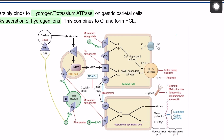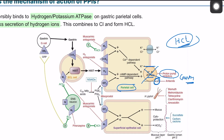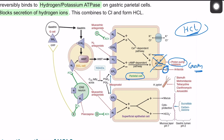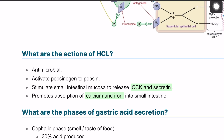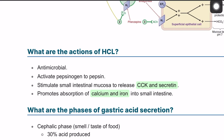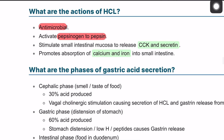Regarding the mechanism of action of PPIs: HCl production relies on parietal cells and an enzyme called the hydrogen-potassium ATPase, which continuously pumps hydrogen ions into the stomach cavity. Proton pump inhibitors work by blocking this hydrogen-potassium ATPase on the parietal cells. Despite causing ulcers, HCl is important — it has an antimicrobial effect, activates pepsinogen into pepsin, activates cholecystokinin, and increases calcium absorption.